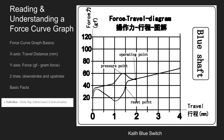Looking at the switch, there are three main components that are pointed out: the pressure point, which is the tactile bump; the operating point, which is where the switch actuates; and the reset point, which is where the switch resets. As you look at force curve diagrams, it's really important to learn the basic facts beforehand. On the bottom we can see that this is a clicky 50 gram switch, 3.8 millimeters of travel, and 2.1 millimeters of actuation.